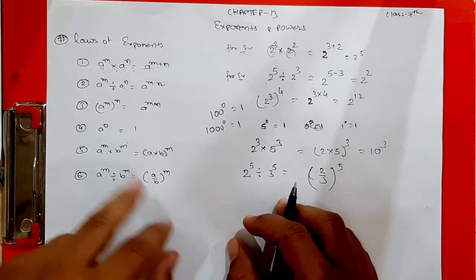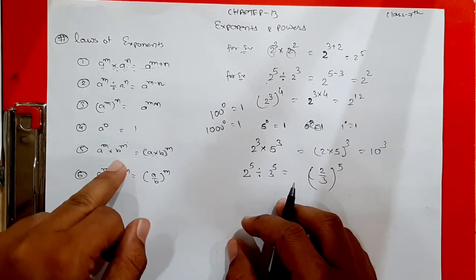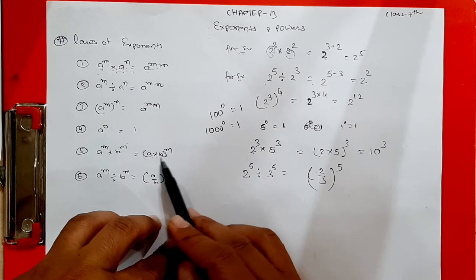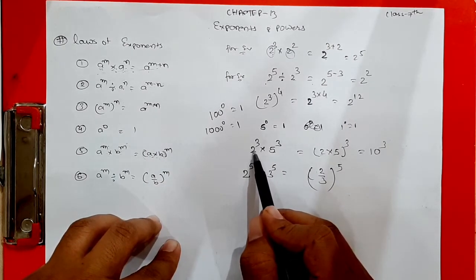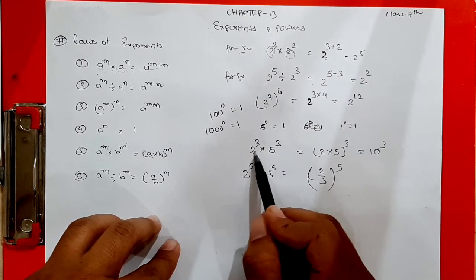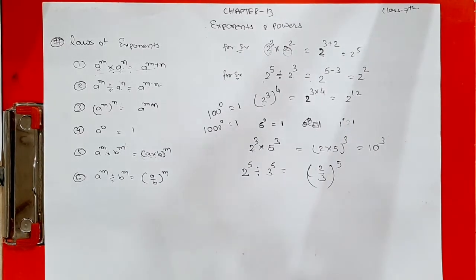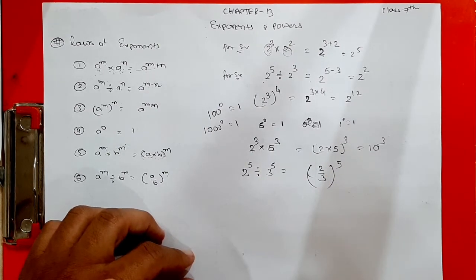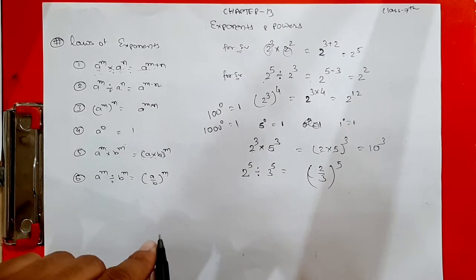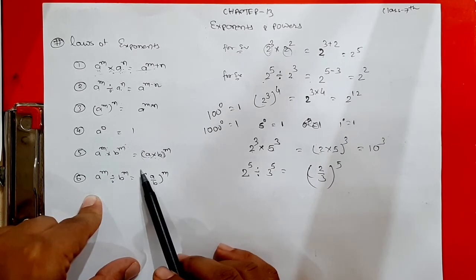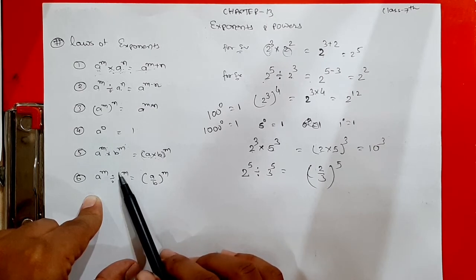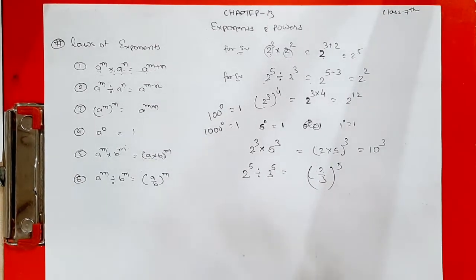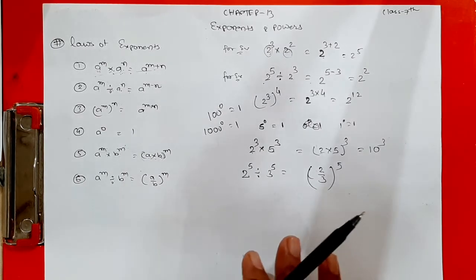Rule 5: if both bases are different but powers are the same and the sign is multiplication, multiply the bases and write the common power — for example 2 raised to 3 times 5 raised to 3 equals (2×5) raised to 3. Rule 6: if both bases are different, powers are the same, and the sign is division, divide the bases and write the common power M.